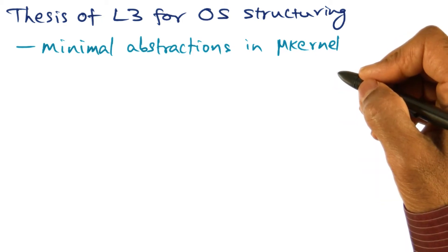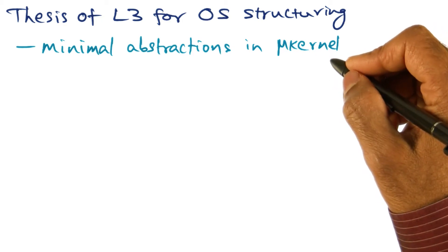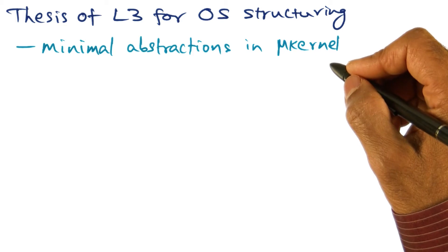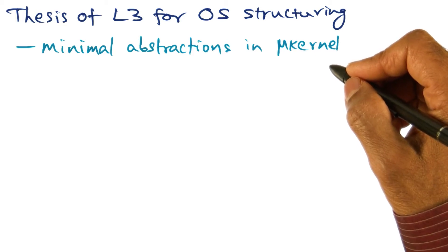Why do we need these abstractions in the microkernel? The argument is that these four abstractions I mentioned - address spaces, threads, IPC, and UID -